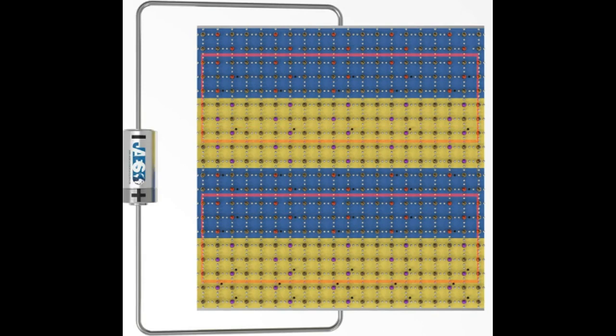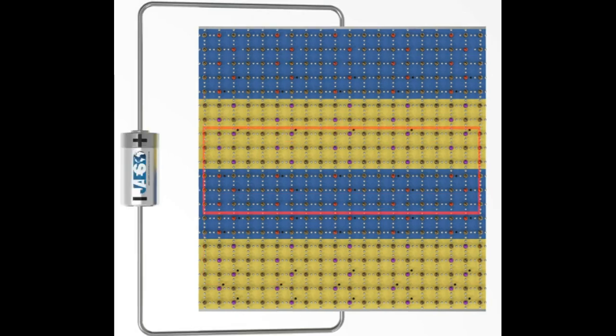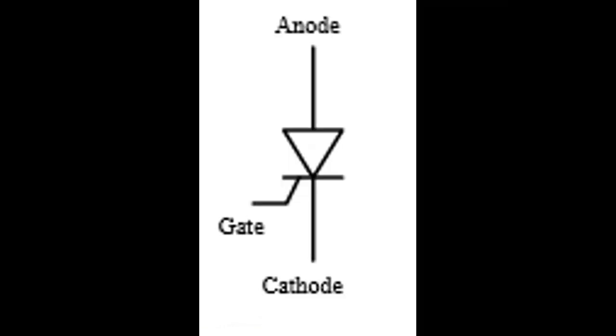In order to conduct electric current in direct polarization, the thyristor must overcome the central depletion region. This method is known as gate triggering.